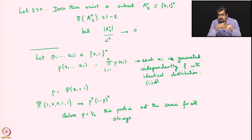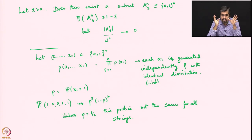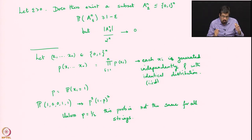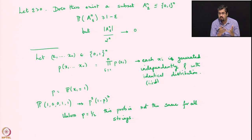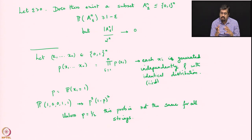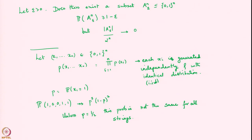If p is 1/2, then p equals 1-p and all strings have the same probability of 1/2^n. But when p ≠ 1/2, strings have different probabilities, so there is scope to prioritize strings with the highest probability, put them together in the set A_n(ε), and check what the probability of that set and the cardinality of that set look like.